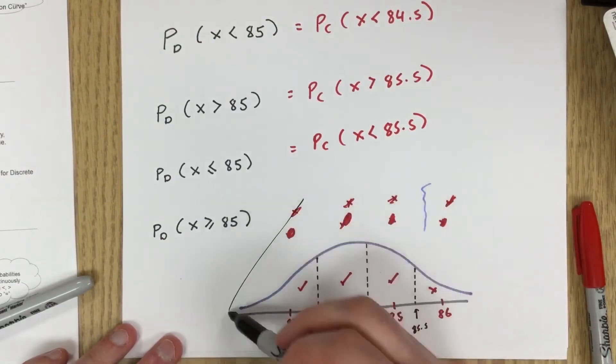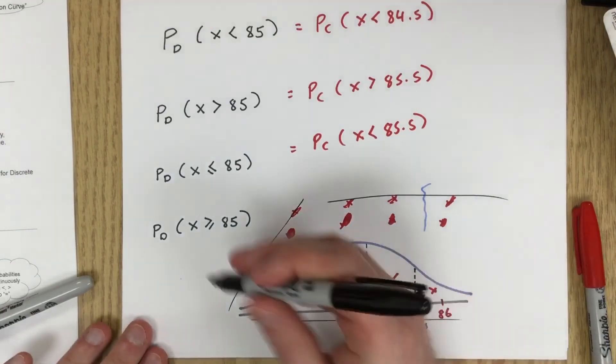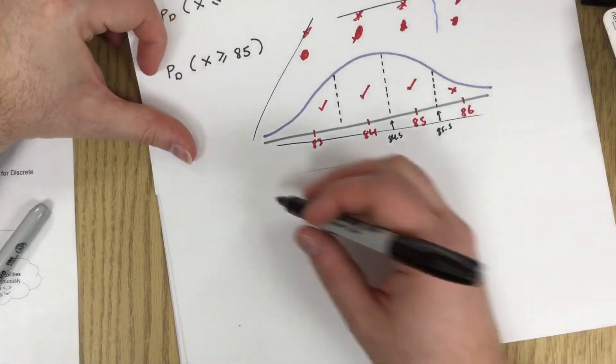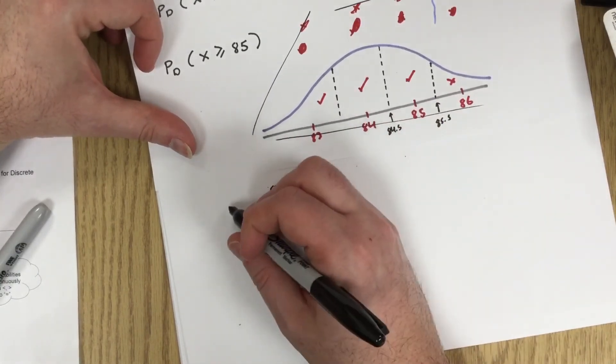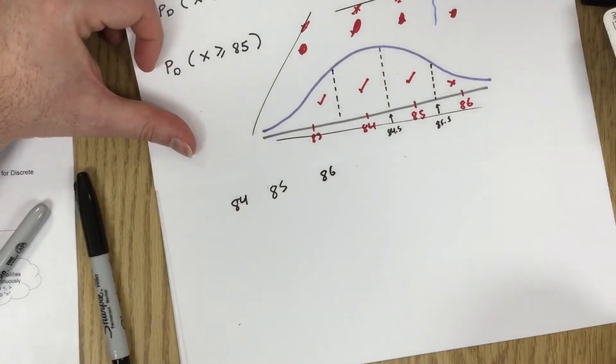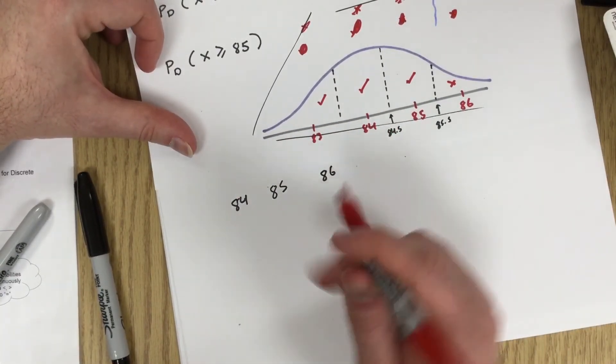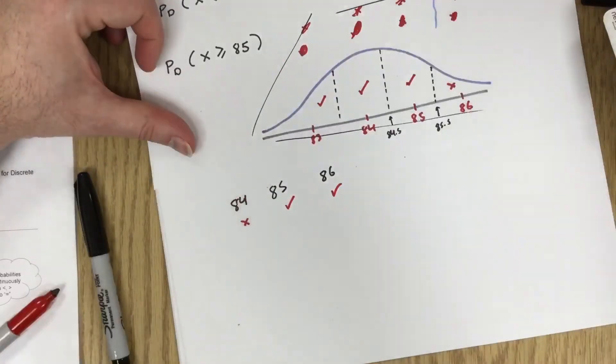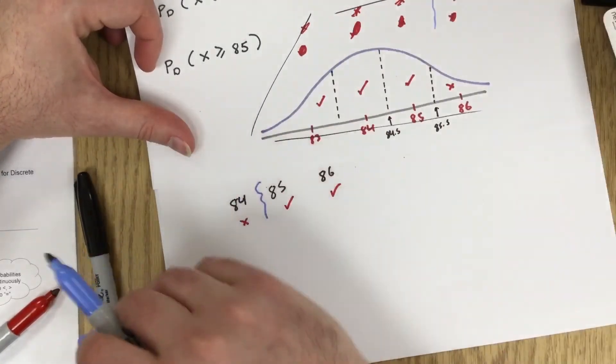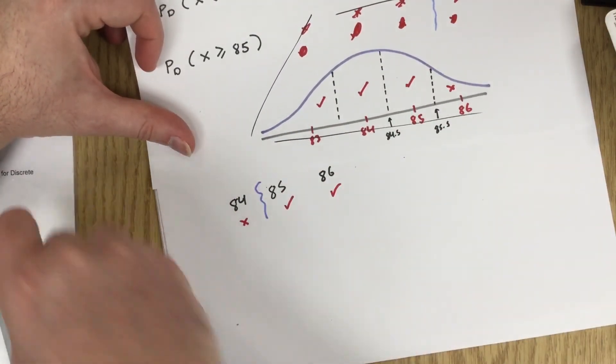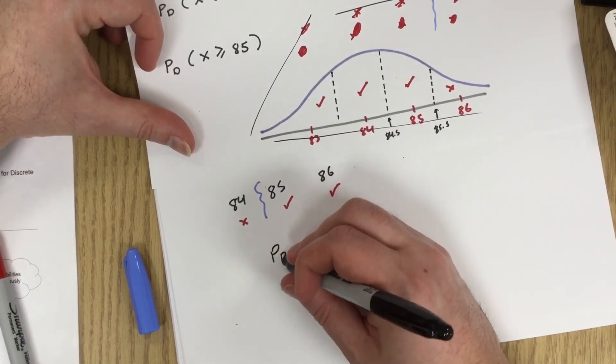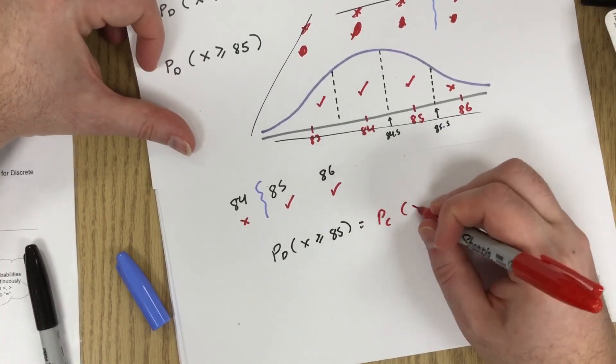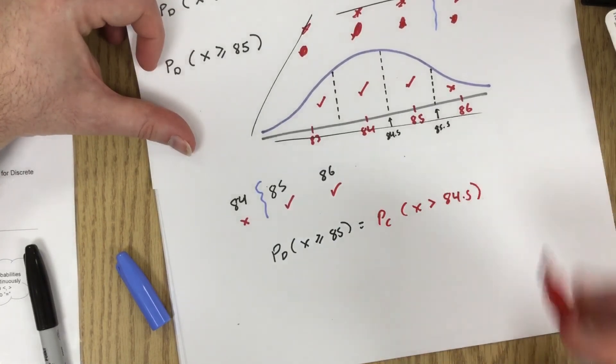Another way of kind of writing this out, instead of drawing this whole chart every time, especially because I seem to be out of room here. I could say okay, let's look at the numbers around 85. So 84, 85, 86. Now I'll do that kind of action check thing. So is 84 greater than or equal to 85? It is not. Is 85 greater than or equal to 85? It is. So our dividing line is over here. And that tells us then that the probability of x being bigger than or equal to 85 is equal to the continuous probability that x is bigger than 84.5.